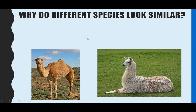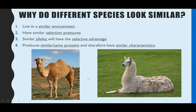Why do some species look similar even though they're different species? Take the camel and the llama — they have lots of similar physical, observable features. The reason links to natural selection and evolution. They both live in similar environments with similar climatic conditions, so they're exposed to similar selection pressures. Similar alleles within their gene pools have the selective advantage, those individuals reproduce and pass on those alleles, so the same or very similar alleles become common in both species populations. Because those alleles code for similar proteins, they produce similar characteristics.